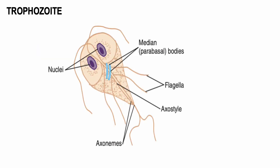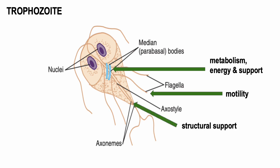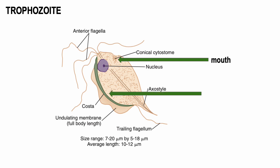Here is some of the anatomy of your flagellates. For the trophozoite, it contains a median body or what we call the parabasal body, which helps in metabolism, energy, and support. The flagella is basically for motility, and the axoneme is also for motility and structural support of the parasite. Another one is your cytostome — the term for the mouth. Your costa connects the undulating membrane to the trophozoite body.